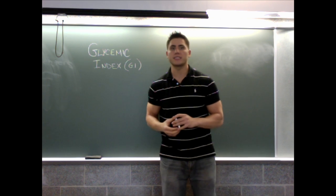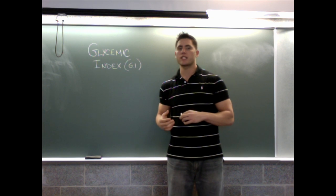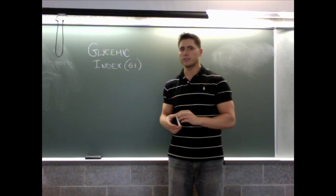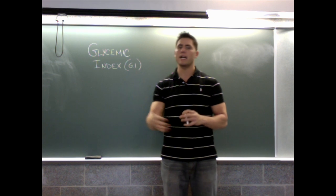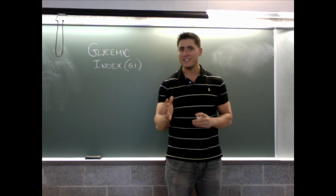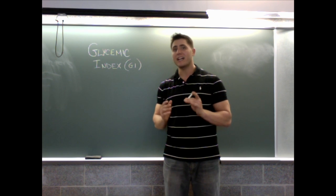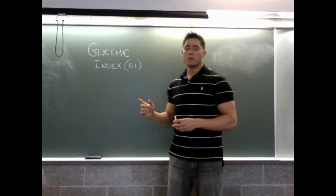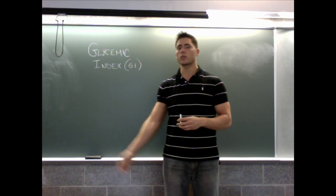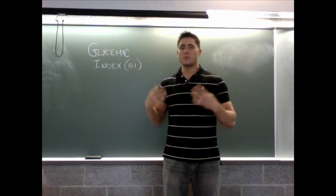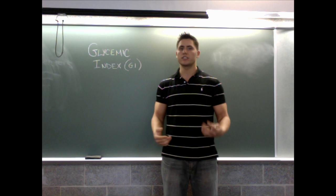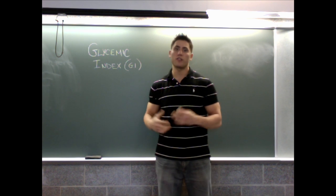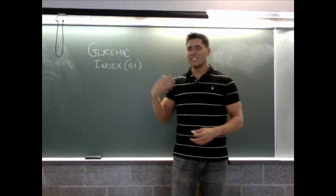So the glycemic index measures the effects of carbohydrates and their ability to raise your blood sugar levels. It was created way back in 1981 and was intended to help people with diabetes manage their blood sugar levels and their meal planning. The problem is it's carried into the real world in healthy individuals and it's been creating a huge controversy over how important the GI is.